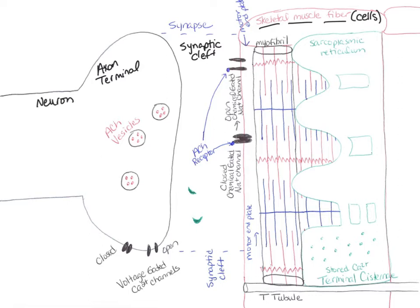First, we're going to look at an excitable neuron sending action potentials propagating down the axon until they get to the axon terminal. At the axon terminal, there are voltage-gated calcium channels that are sensitive to voltage. The voltage of the action potential goes up to plus 30 and back down to negative 90, and then back to resting. This stimulates those calcium channels to go from closed to open because of that voltage change.